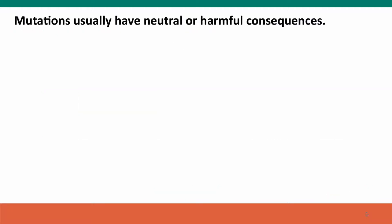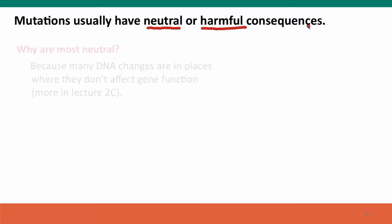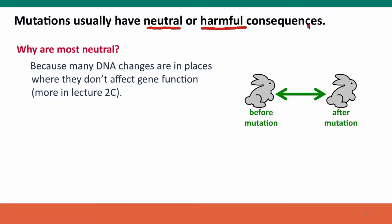Now let's think about the consequences of these mutations. The most important point to know is that most mutations have consequences that are either neutral or harmful. Mutations that are beneficial are very rare. Most mutations are neutral because they occur in places in the genome where they don't make any difference to gene function — we'll talk more about this in lecture 2C.